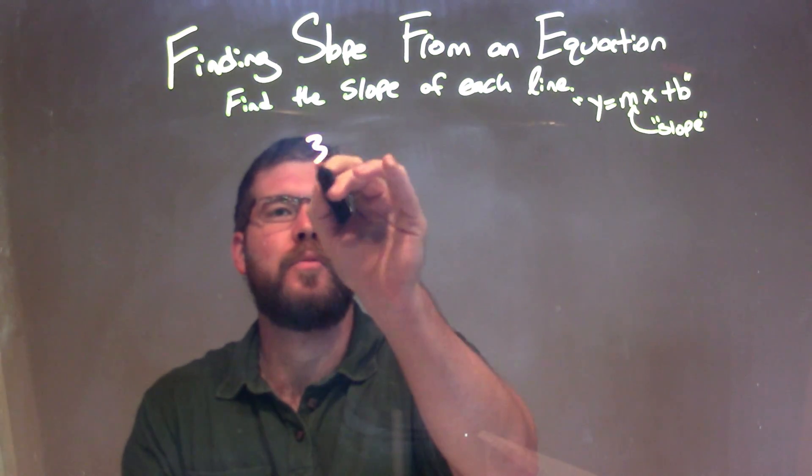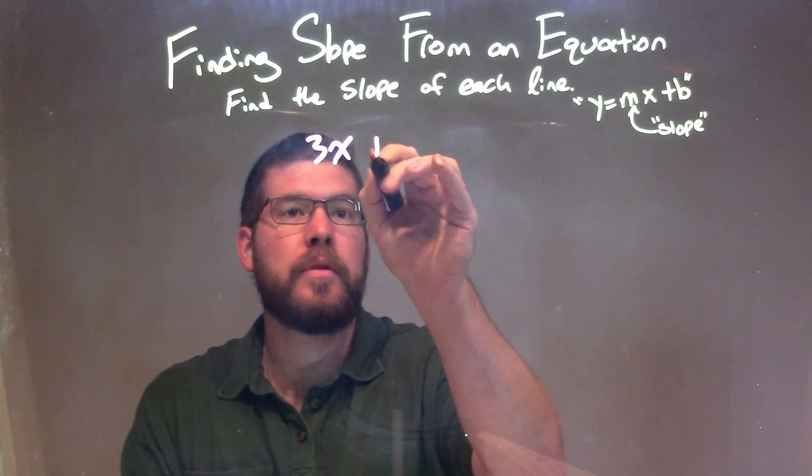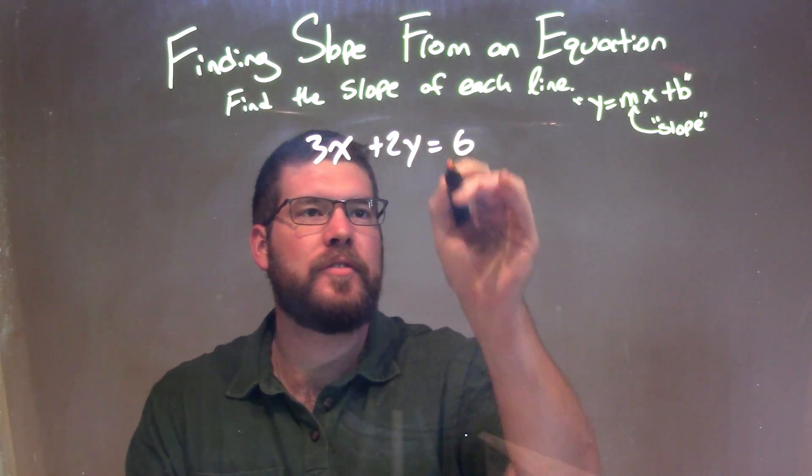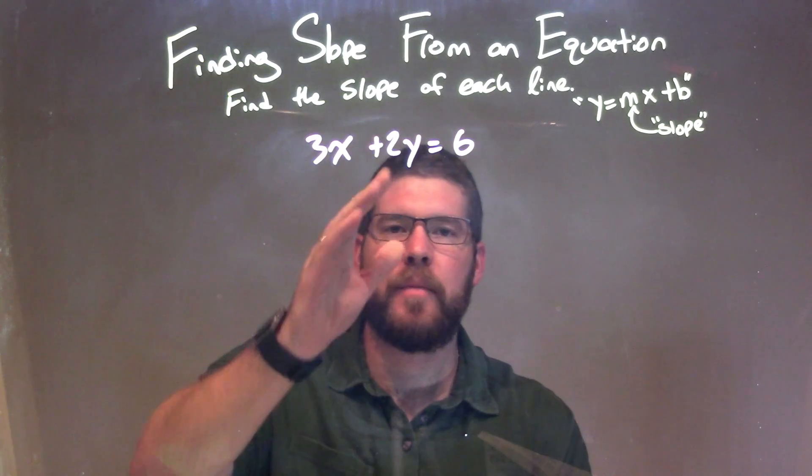So if I was given this equation, 3x plus 2y equals 6, I need to isolate my y.